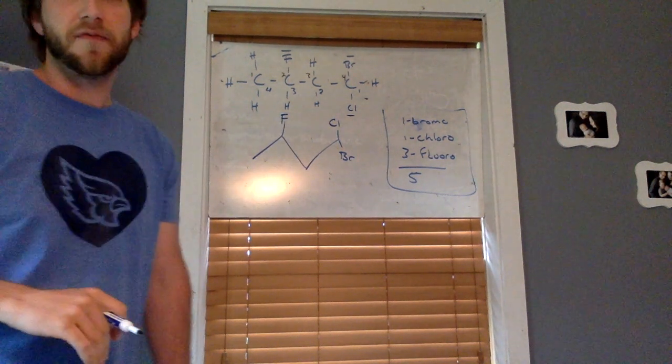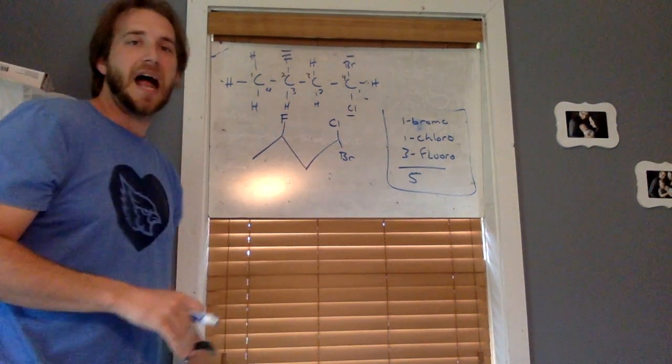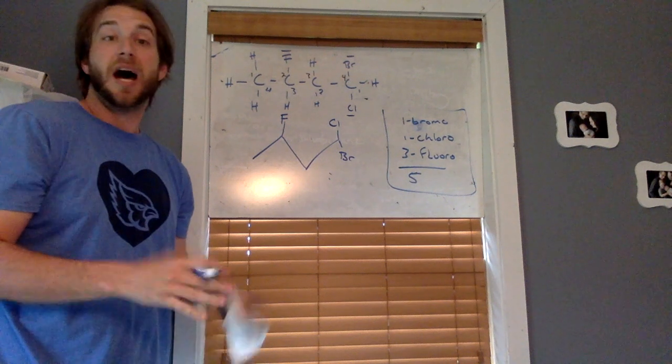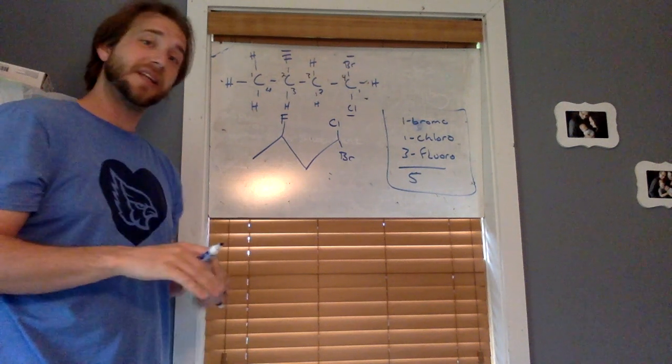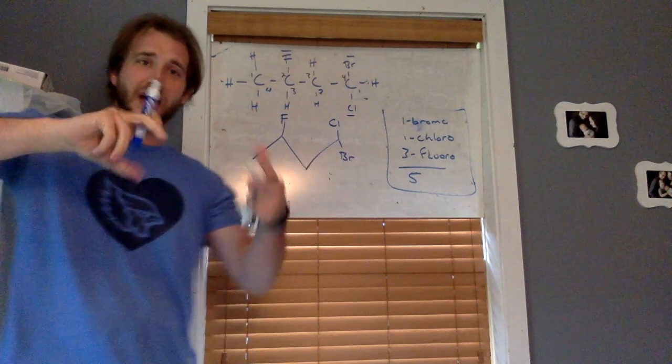So this would be the skeletal form for this alkane structure. Could be a lot of different ways we start to look at these because these are all single bonds. We've got kind of rotation.